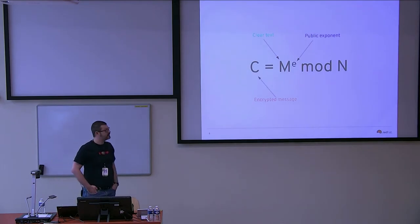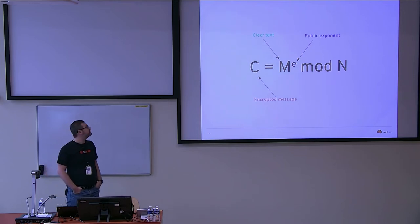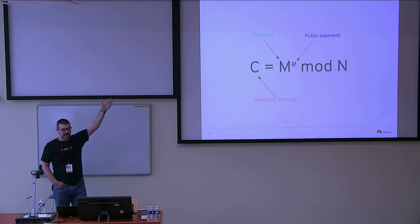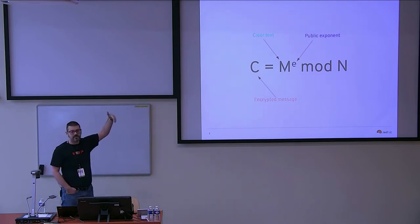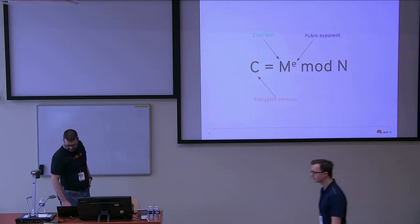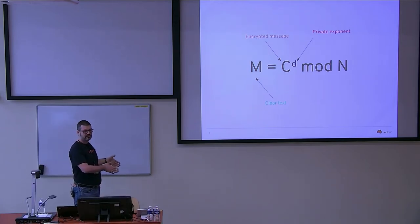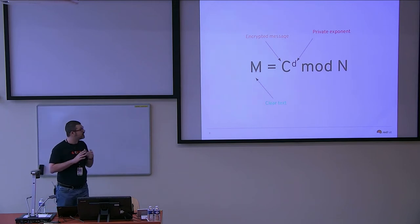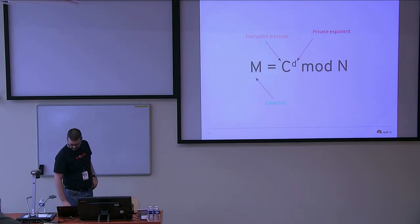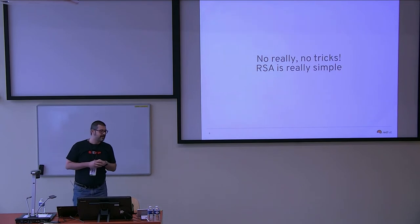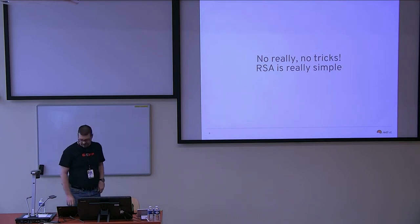This is fundamentally RSA — a pretty straightforward function. This is the encryption function: C is your ciphertext. All you need to do is take your message, exponentiate it with the e-exponent, which is called the public exponent, and then do modulus. This is also the way you do signatures. And this is how you decrypt the message: take the ciphertext generated, exponentiate it with your private exponent, modulus again, and you get back your message.